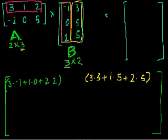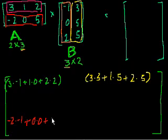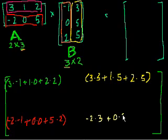Now we're in the second row. I multiply this second row vector times the first column vector: minus 2 times minus 1, plus 0 times 0, plus 5 times 2. And for row 2, column 2: minus 2 times 3, plus 0 times 5, plus 5 times 5.